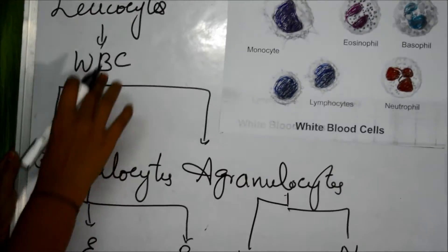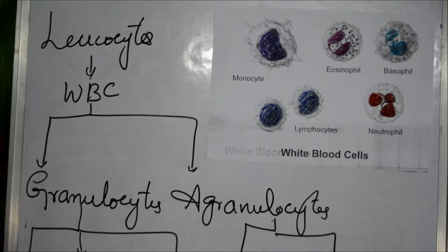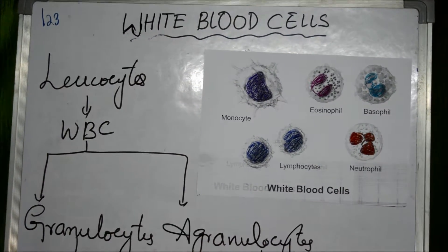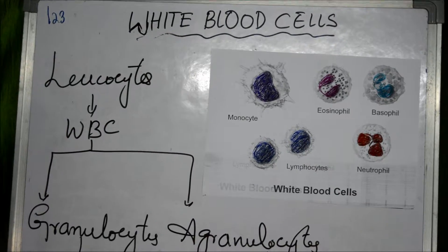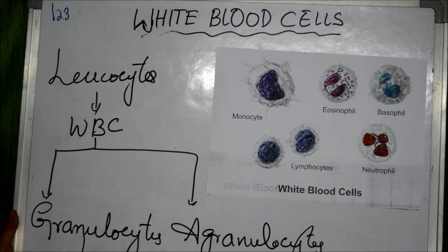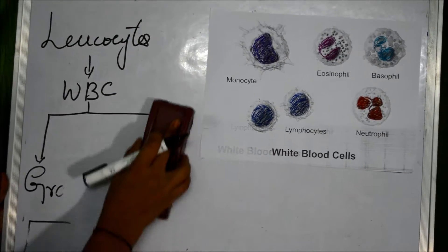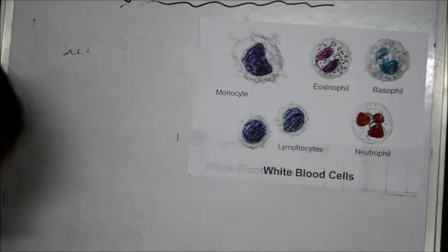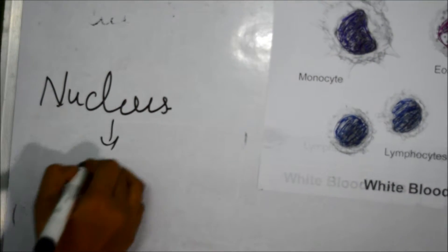Let us come to know about these leukocytes or WBC, which means white blood cells. These are comparatively larger than red blood cells or RBC. These cells are irregular in shape and they look like an amoeba, and each leukocyte has a nucleus inside. In RBC there is no nucleus, but in WBC a nucleus is present.